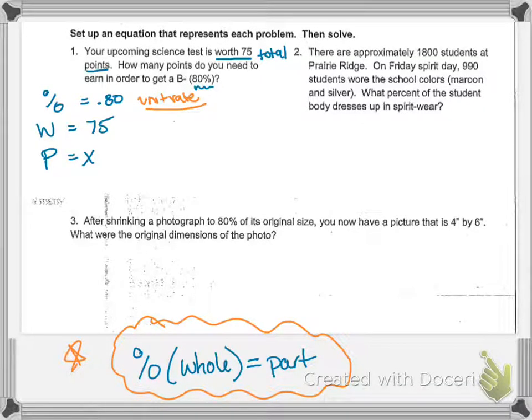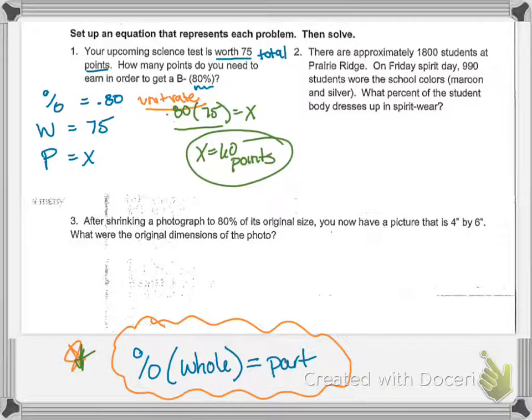The percent times the whole equals the part, and I'm going to plug everything in. So I have 0.80, my percent, times my whole amount is 75, equals, I don't know. X is all by itself, so I'm just going to multiply those two things together. 0.8 times 75 gives me 60 points, and that makes sense for the problem. I need to get 60 points out of 75 if I want an 80 percent or a B minus on this test.